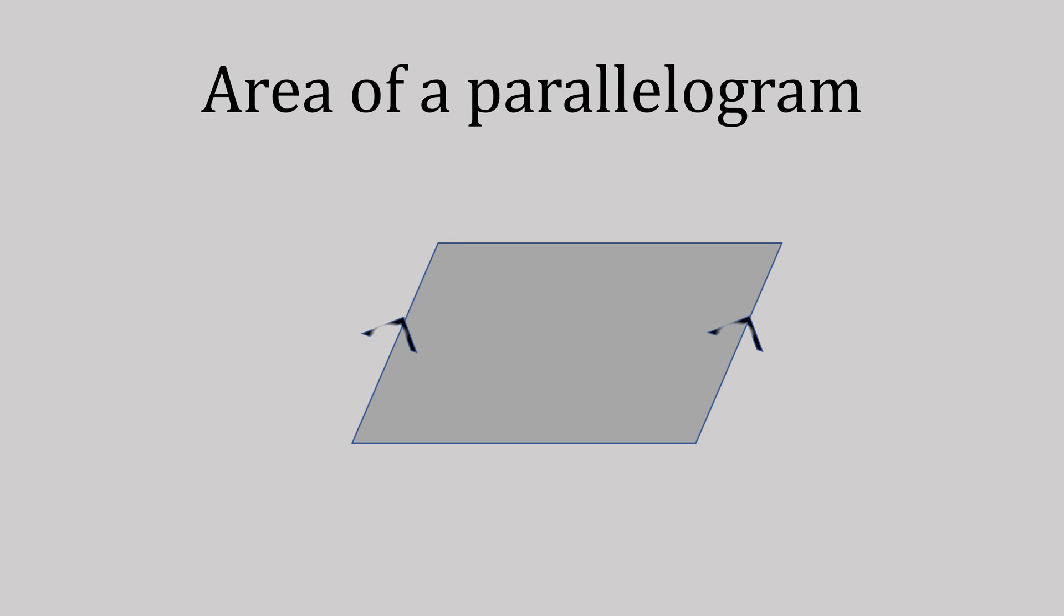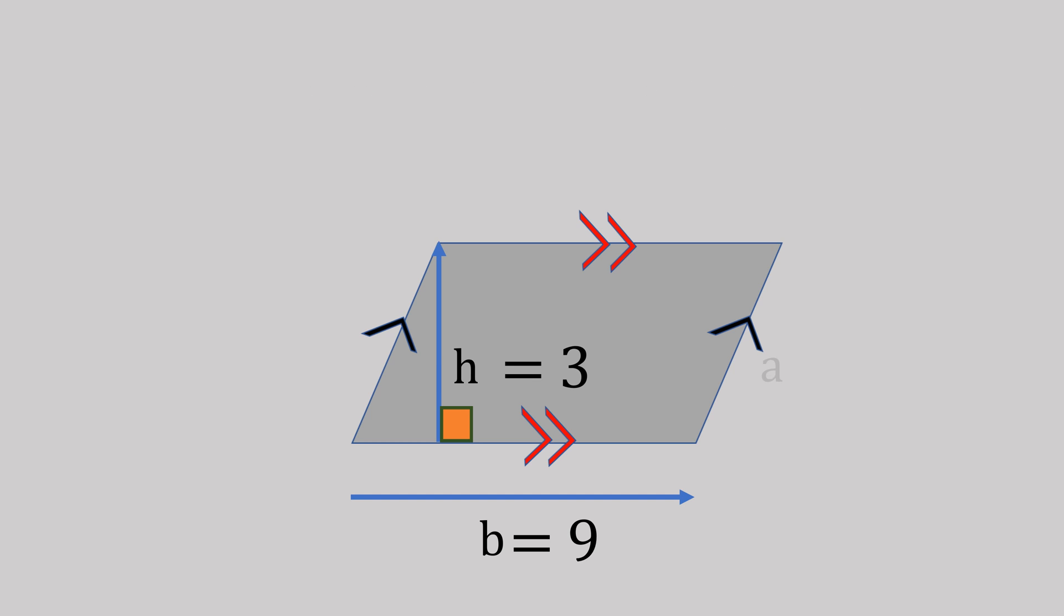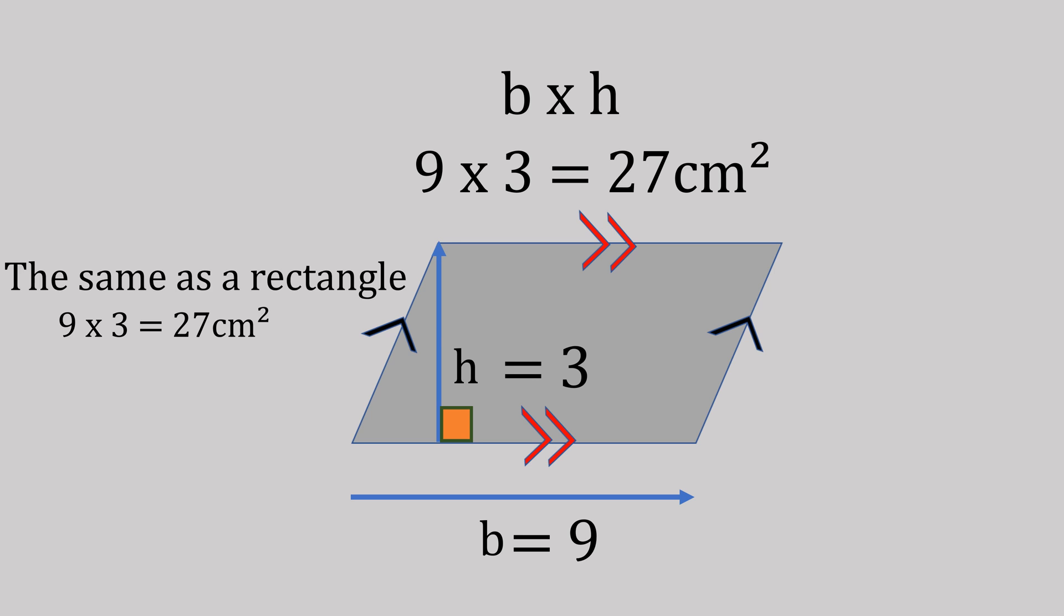So let's do another area of a parallelogram and we'll mark on to show that it's a parallelogram with equal sides. So our base measurement here would be 9 and our height, not side length, would be 3. So that would be 9 times 3, which gives us 27 centimeters squared. And again, that'd be the same formula as a rectangle with the same measurements.